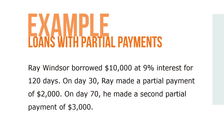Here's an example. Ray Windsor borrowed $10,000 at 9% interest for 120 days. On day 30, Ray made a partial payment of $2,000. On day 70, he made a second partial payment of $3,000. What is the maturity value of the loan after the partial payments?